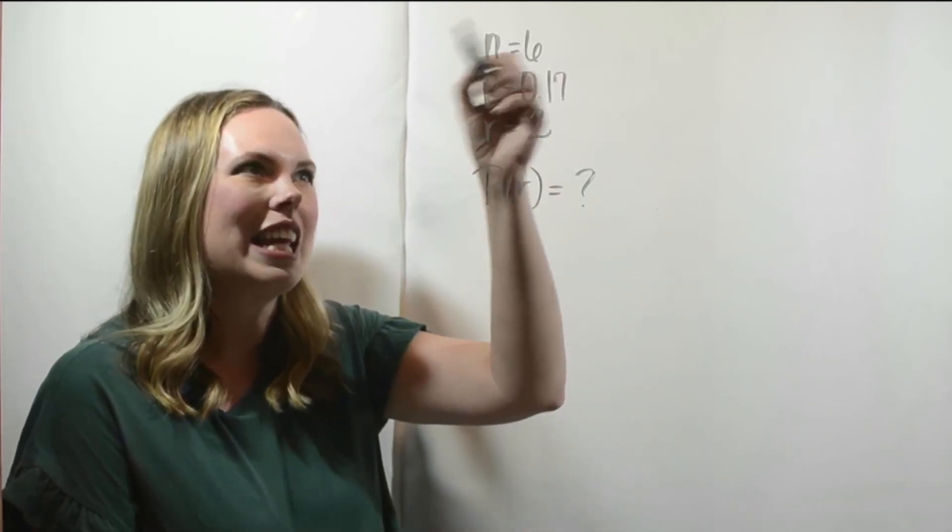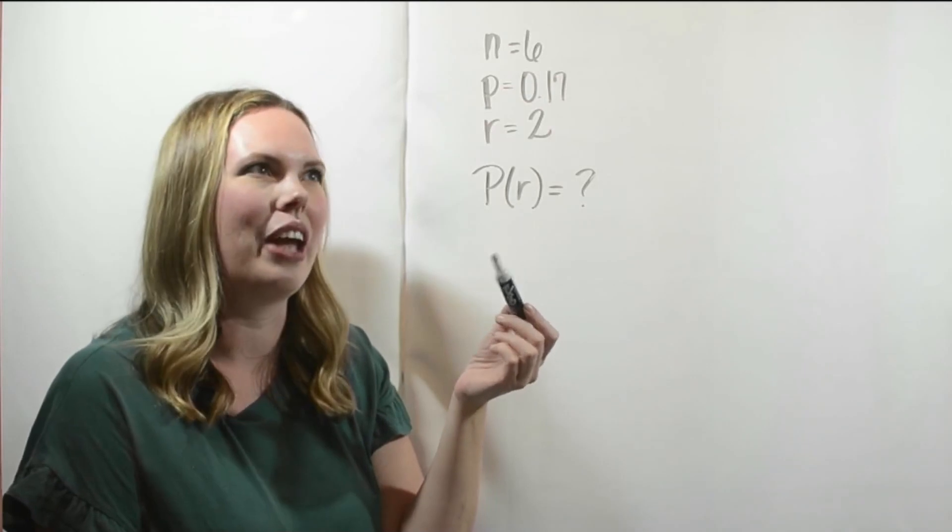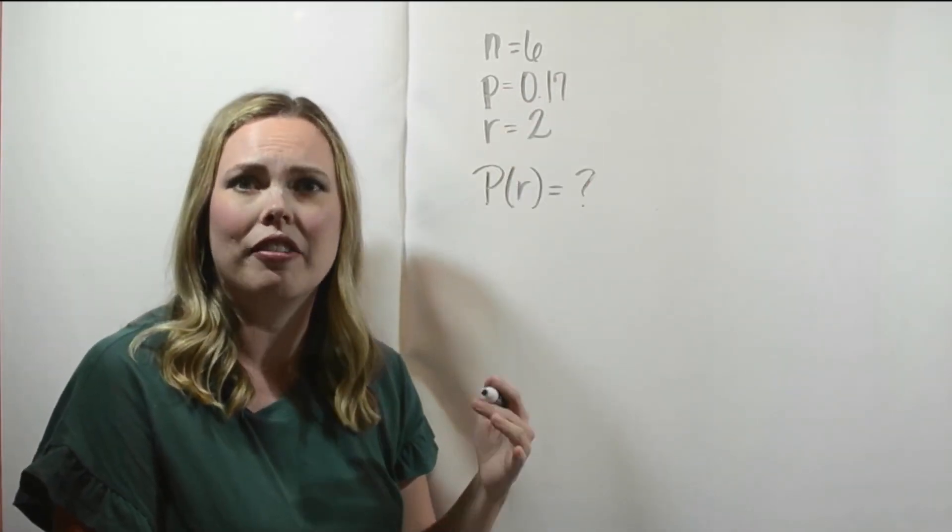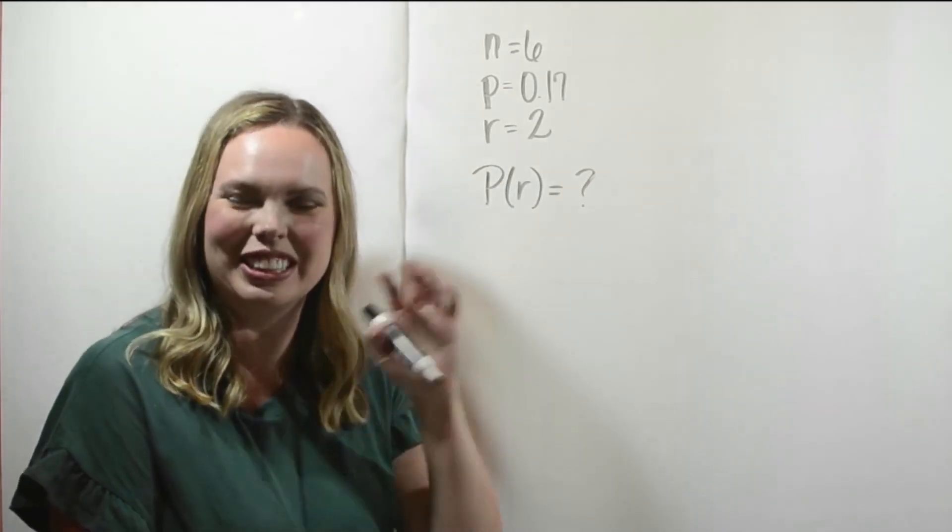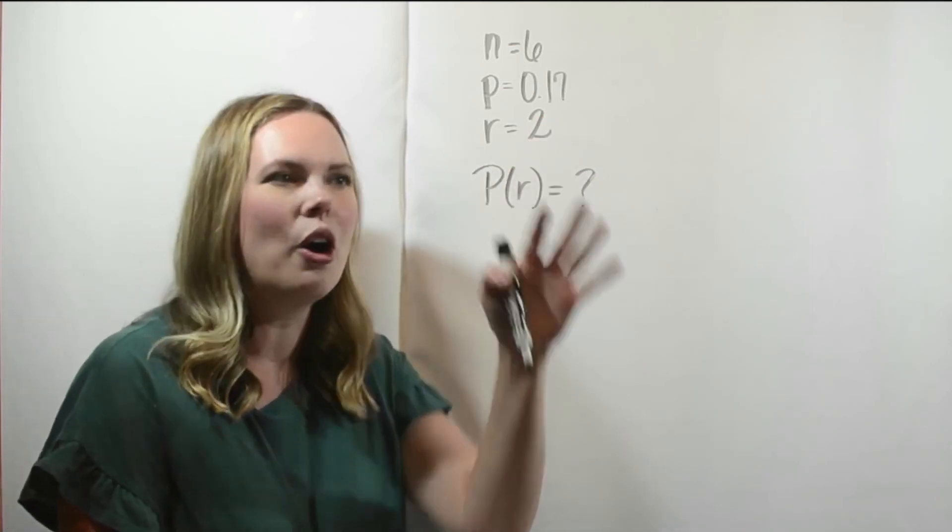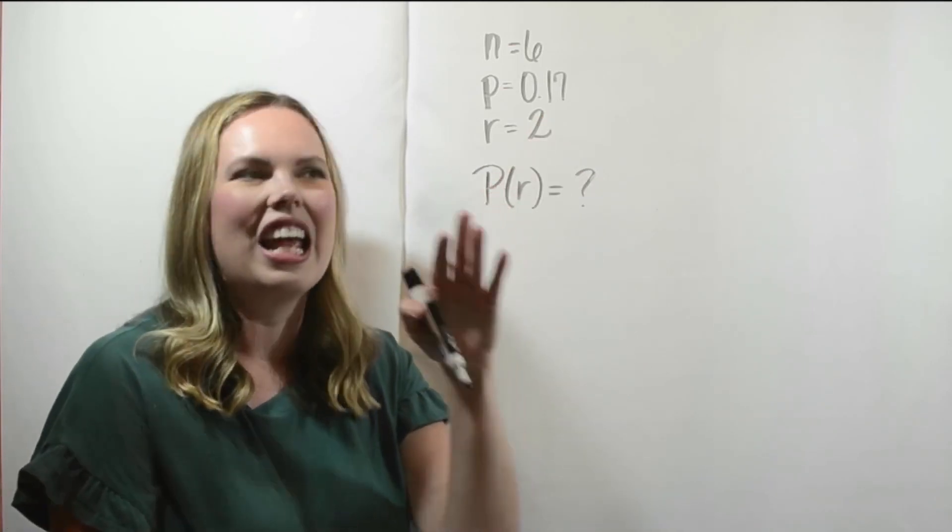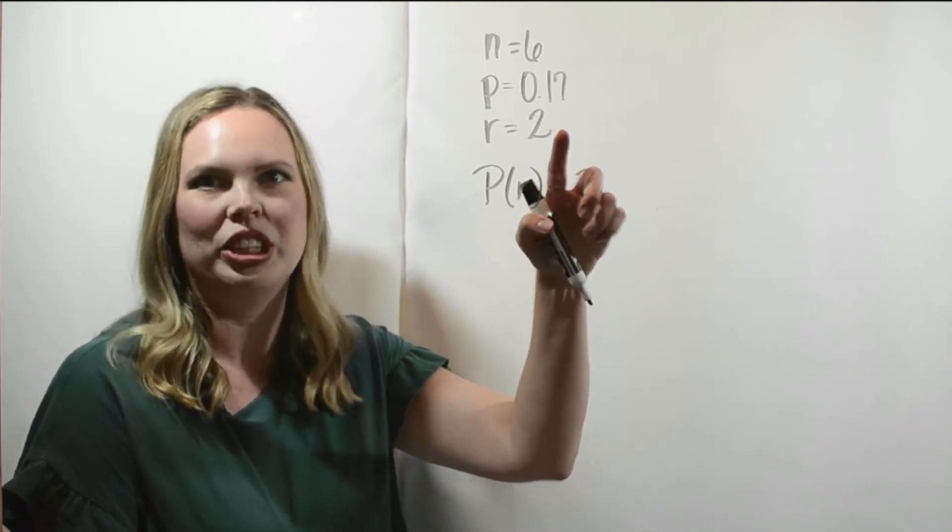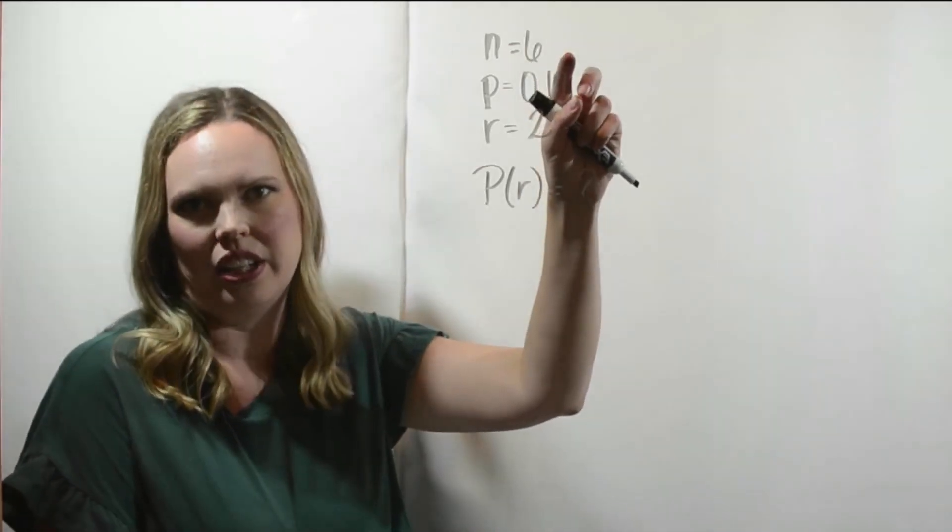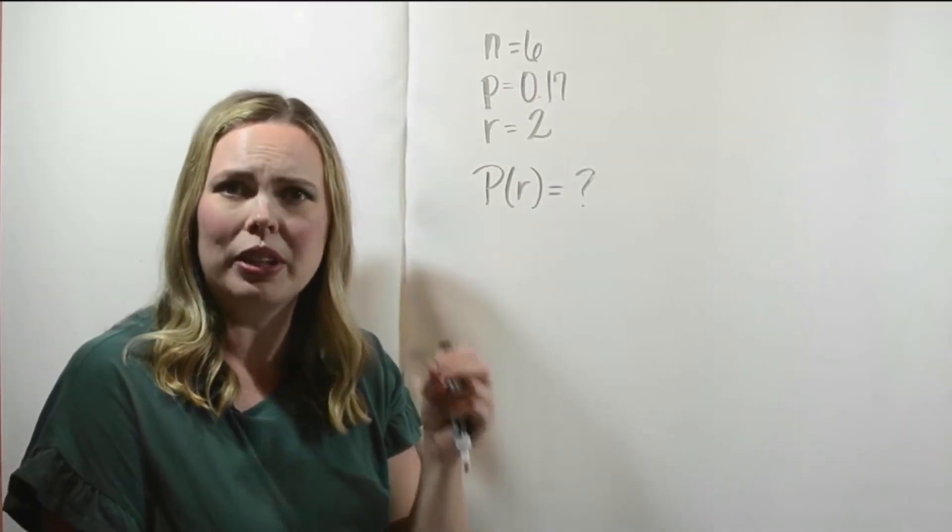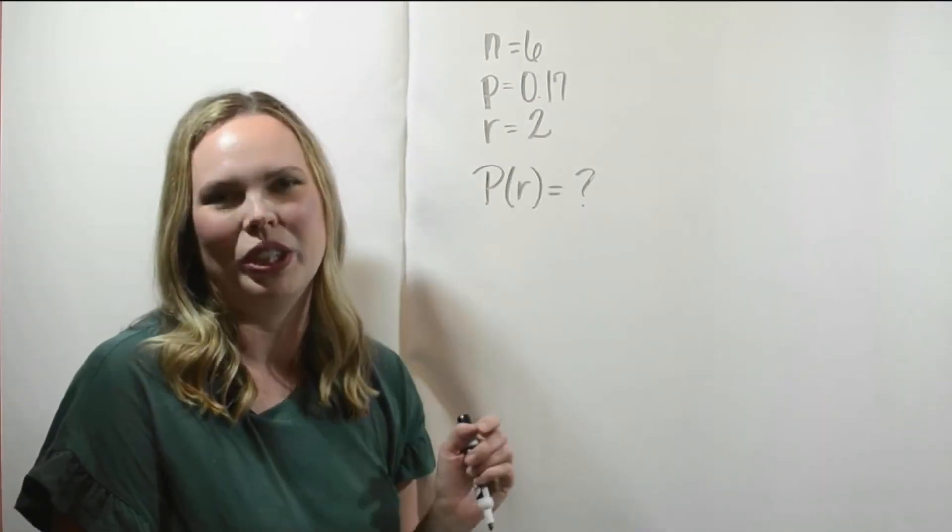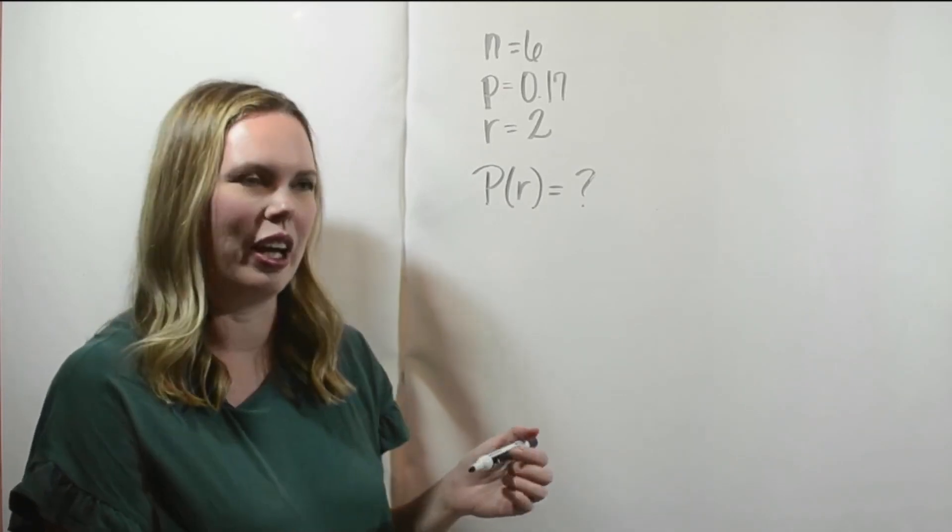So we've got our N given here, this is the number of trials, we've got our P given, this is the probability of a success in one trial, in a single trial, and we want to know the probability of two successes. So what you're computing here is the probability of R, which is two successes, exactly two successes, in six trials, when the probability of a success on that trial, one iteration of that experiment, is 0.17, or 17% if you like percentages better.